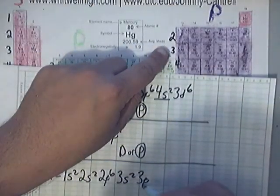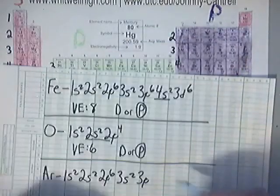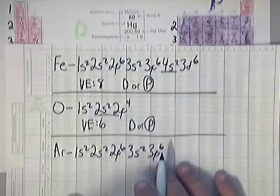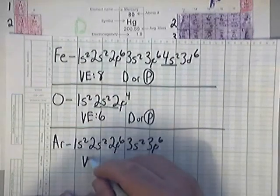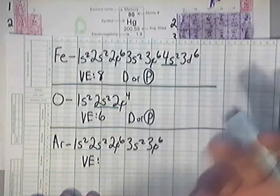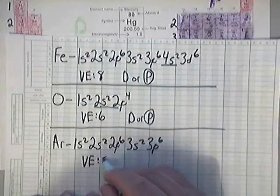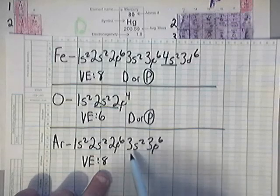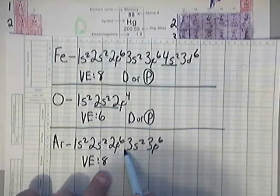Now valence electron count, let's get this. What's the valence electron count of argon? Well it is a noble gas, and all noble gases except for helium have eight valence electrons. Helium only has two. Let me show you this: notice that the highest principal quantum number, highest energy level, is 3. Notice that this s has 2 and this p has 6. 2 plus 6 is 8.